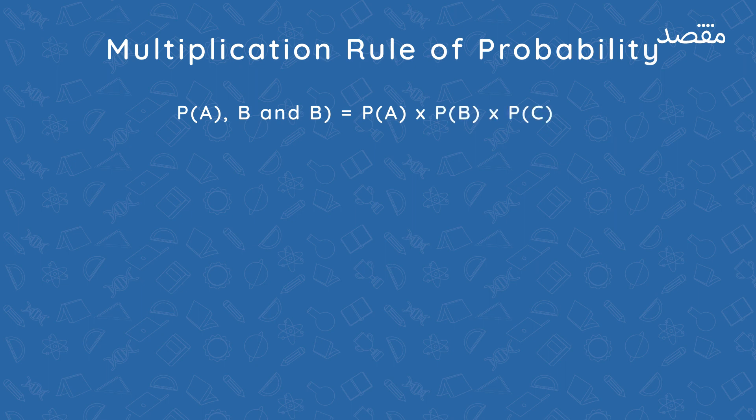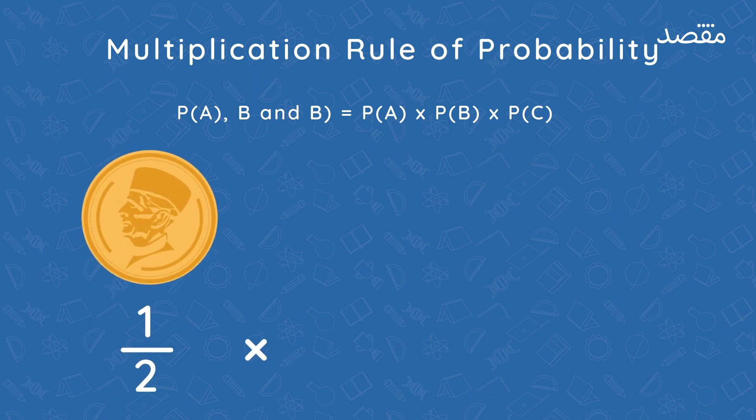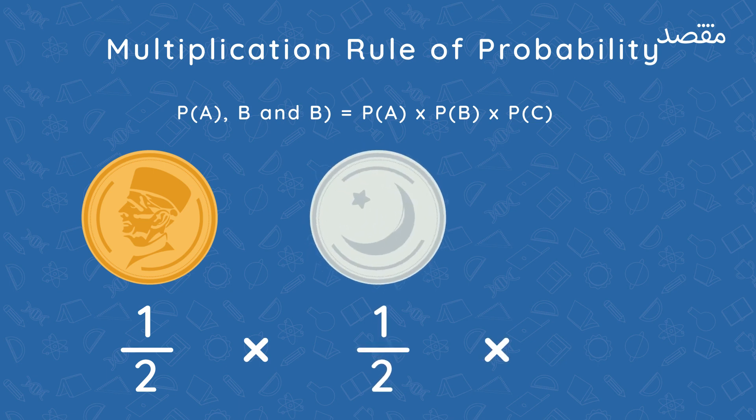In this case, the probability of flipping tails three times is the probability of flipping tails on the first coin multiplied by the probability of flipping tails on the second coin and then multiplied by the probability of flipping tails on the third coin.